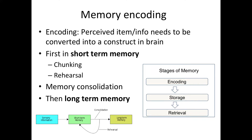Before we can have memories, we have to first create them, and we call this part memory encoding. Information that we perceive has to be converted into a neurobiological construct in the brain. First, it will go to our short-term memory, and then we want to convert this short-term memory into our long-term memory.